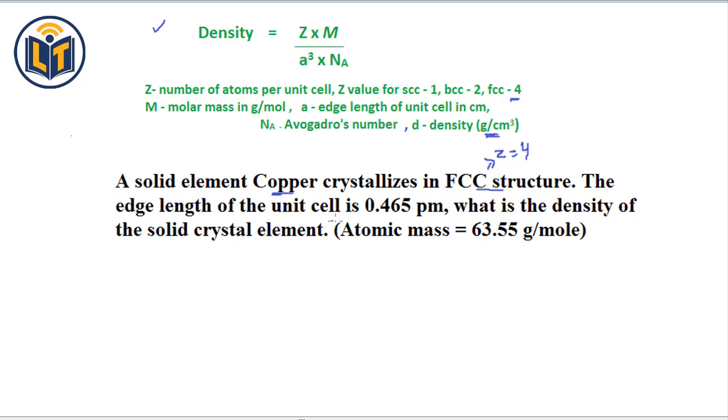The edge length of the unit cell is 0.465 pm. Edge length means a value is given. And here you can see that edge length should be in centimeters. But here in the problem, it is given in picometer. That's why we do the conversion from pm into cm.